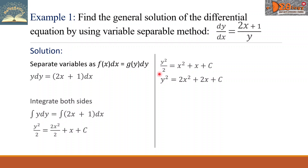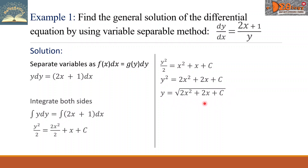Take note that when we multiply 2 to the c, it will just be absorbed by the constant of integration, so we simply write c. To remove the power 2 for y, we take the square root of the quantity 2x squared plus 2x plus c. This is the final answer.